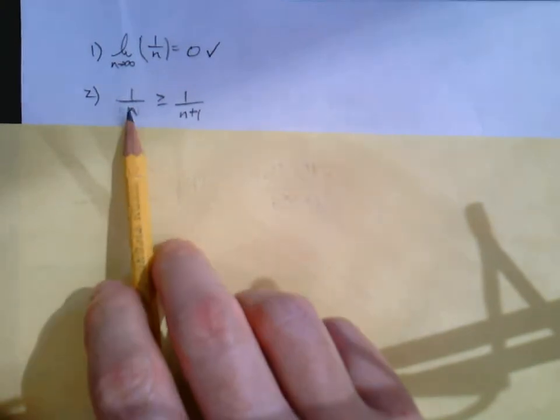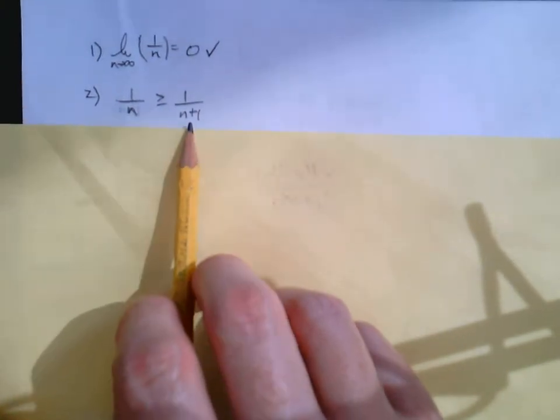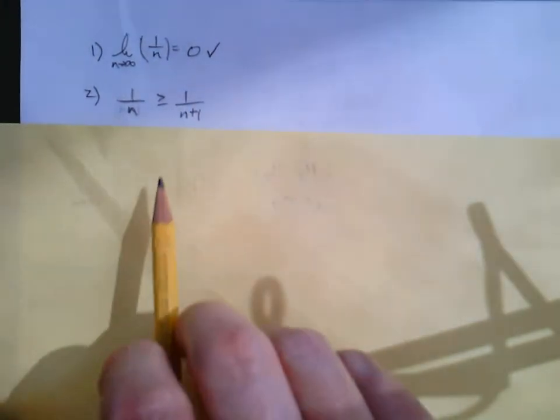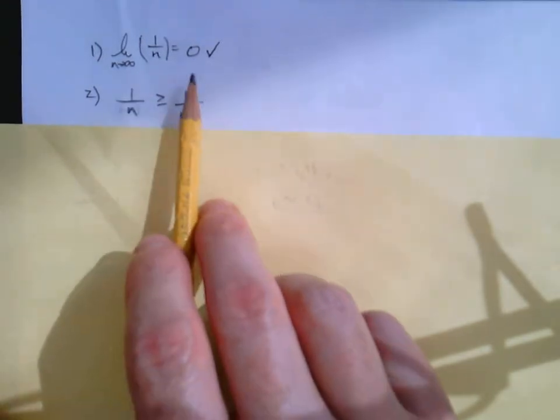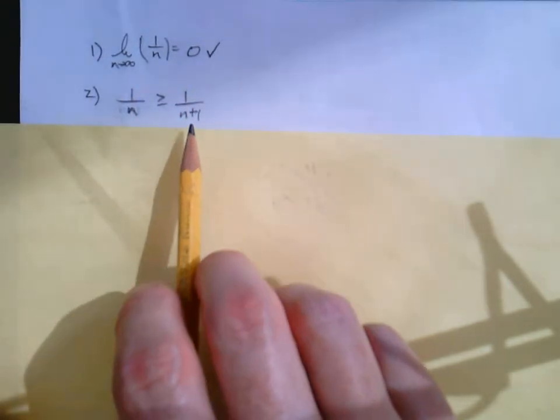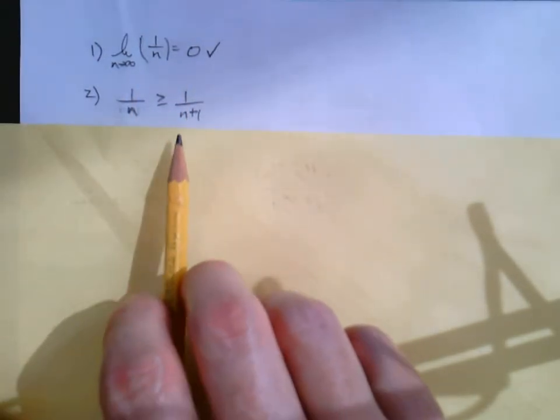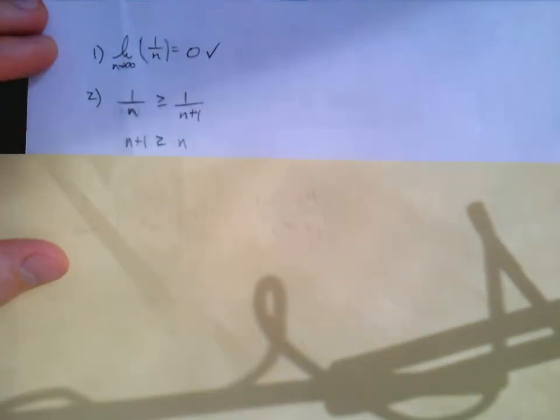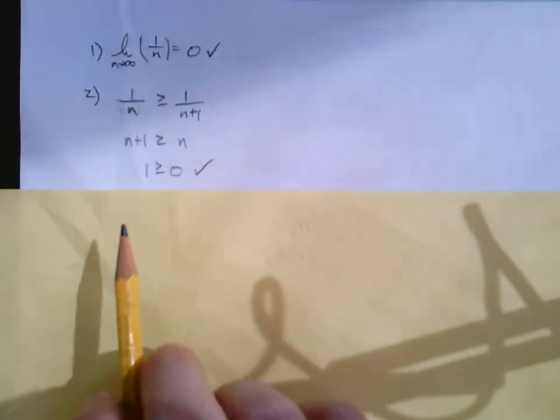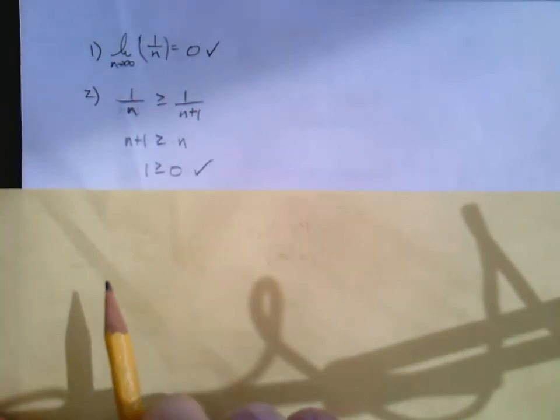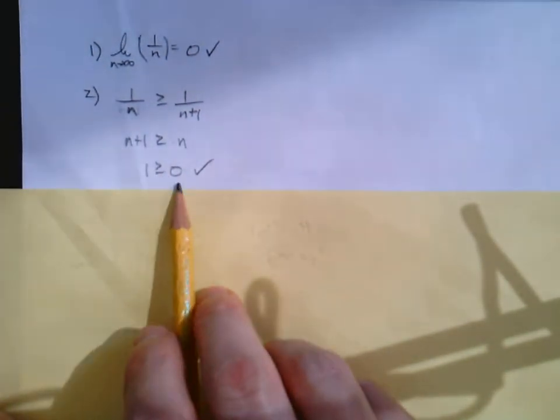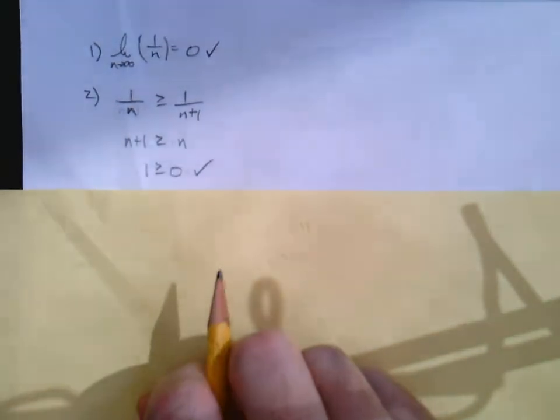The nth term, 1 over n. The next one is 1 over n plus 1. We just have to show that this is true. Well, we've done this several times now. We can cross-multiply. And we can subtract n. And that is painfully obvious. 1 is greater than or equal to 0. Yes, that's true. Check.